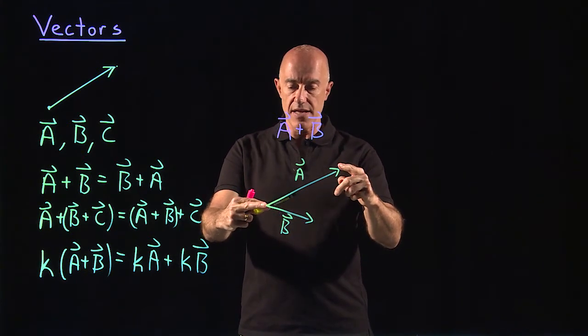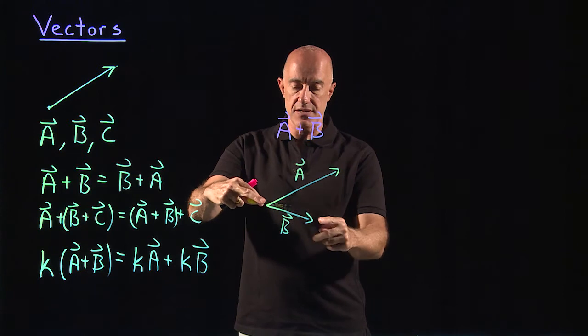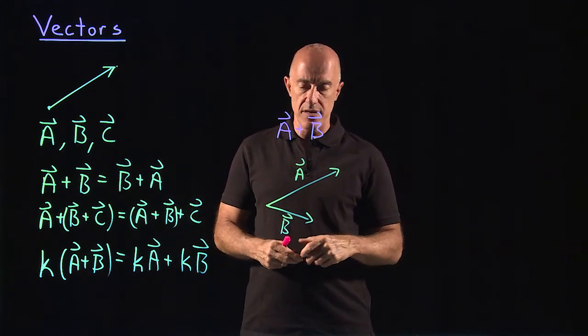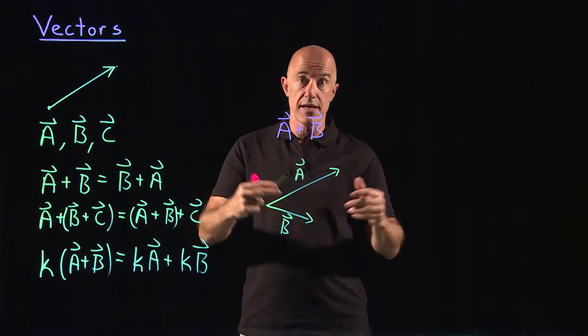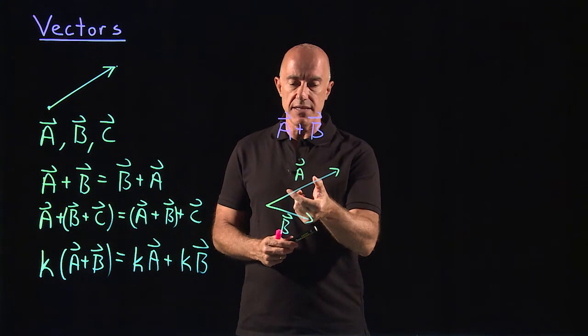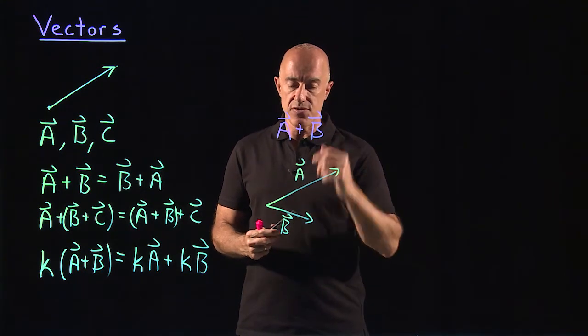Vector a has a length and a direction. Vector b has a length and a direction. We can move these vectors around to wherever we want in space. The way you do vector addition is you place these vectors head to tail.